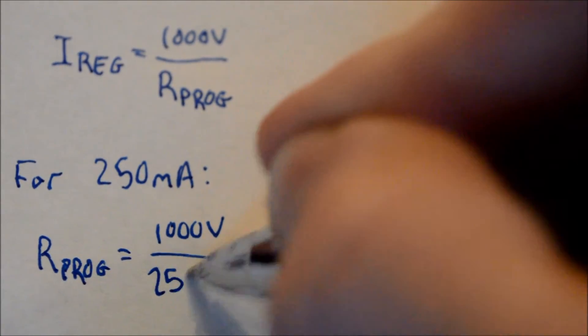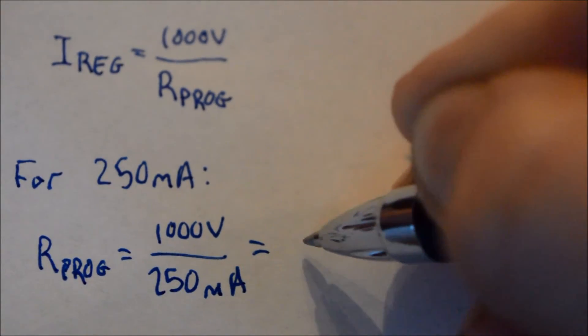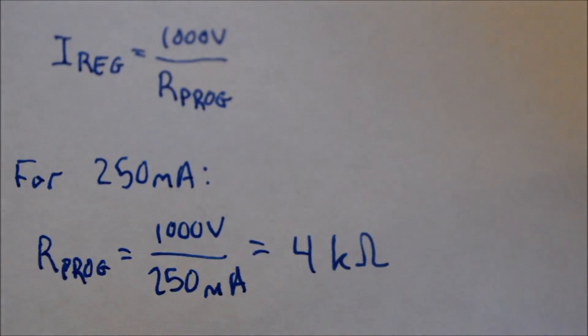We can calculate our PROG resistor for any rate of charging circuit that we want to use. We will begin by using the formula I_reg equals 1,000 volts divided by R_prog. For a 250 milliamp charging circuit, we would use R_prog equals 1,000 volts divided by 250 milliamps. And this would give us 4 kilo ohms. So that would be the size of the resistor R_prog that we would need to use.